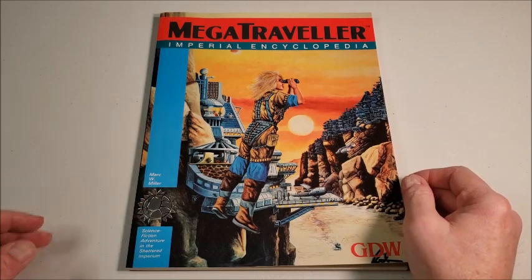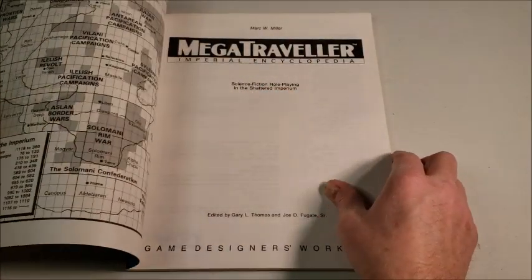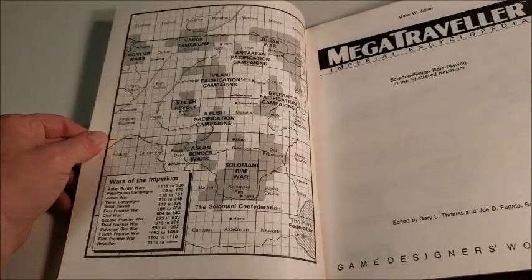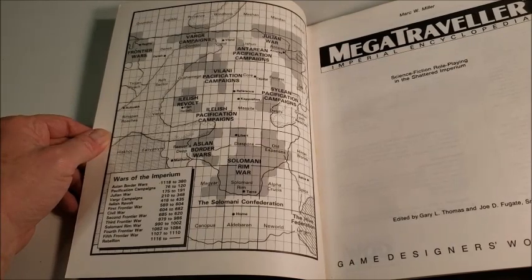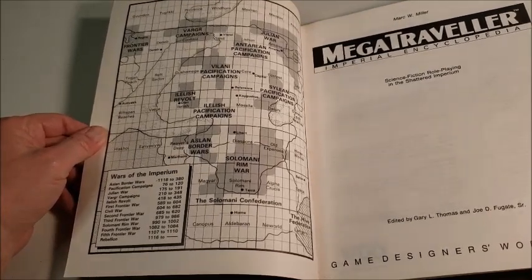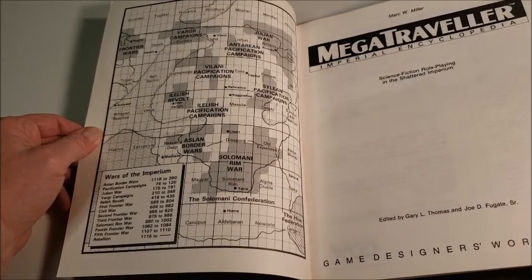So for this guy, it's the Imperial Encyclopedia. Really what it was, was the library data. This gave a nice inside look at all the different factions. This isn't even all the factions, but a lot of the different factions in the War of the Imperium. I'm sorry, these are just the general wars that the Imperium has fought. This is not the Rebellion.